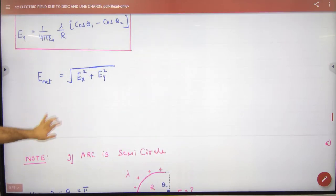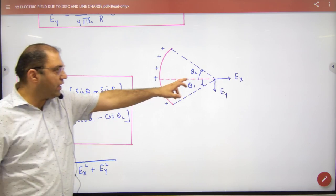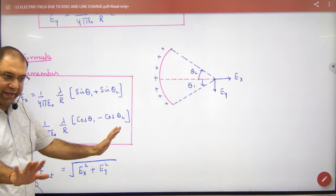An example is, we have done this formula that if we have an arc, if we have an arc here, then this will be E in the x-axis and y-axis. Done.